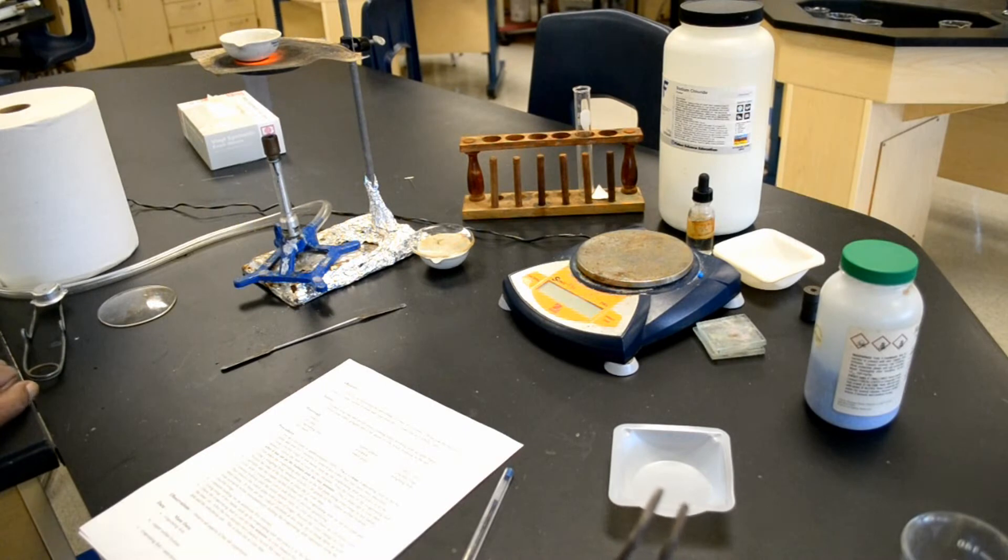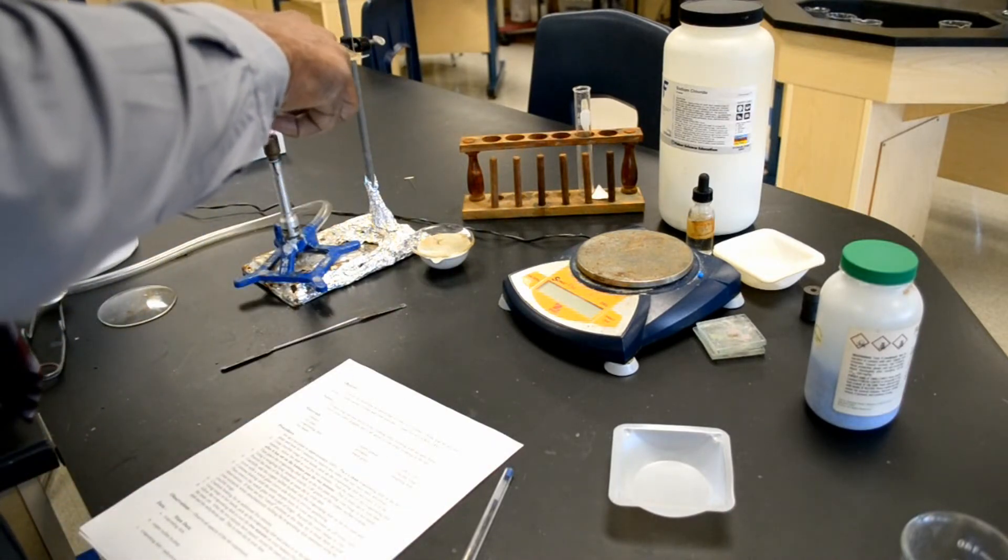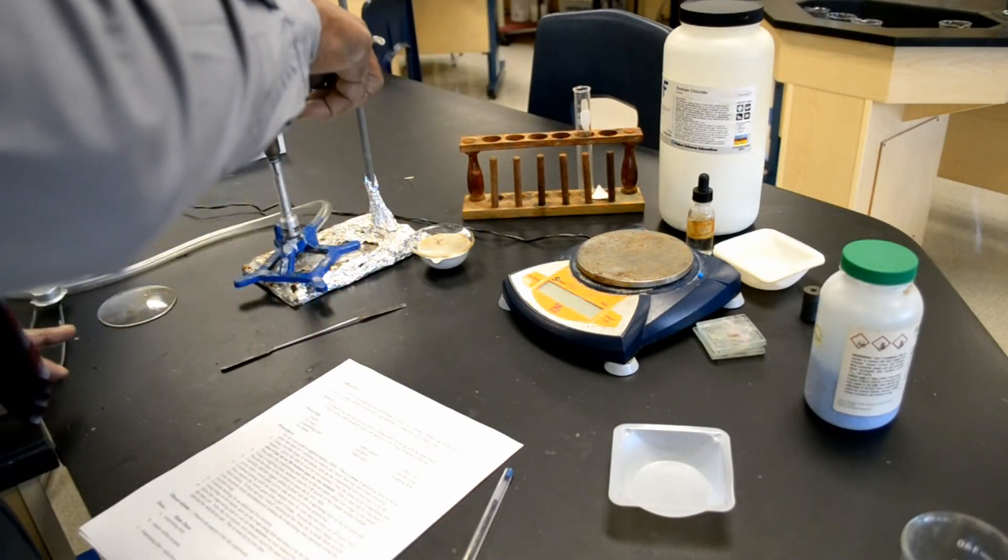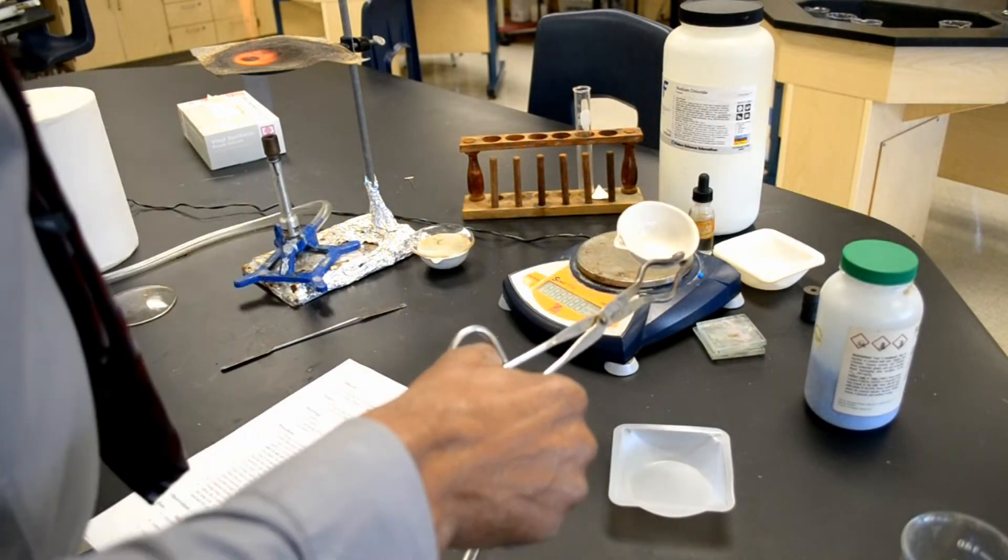Using crucible tongs or hot hands, pick up the evaporating dish and place it on a balance. I'm going to assume that four or five minutes has passed, I'm going to place my evaporating dish on the balance.